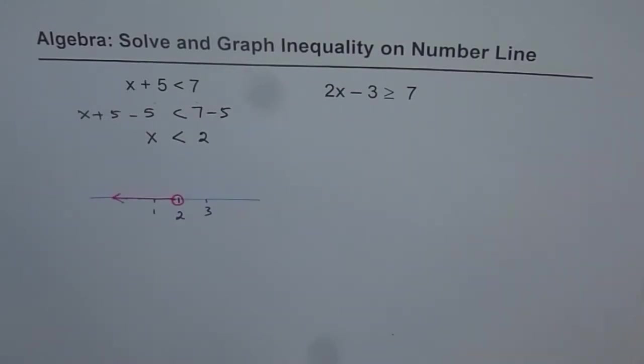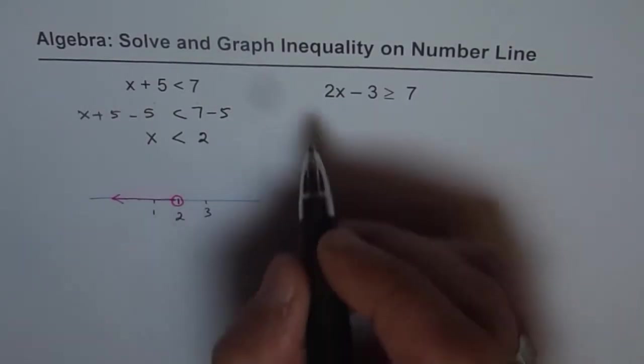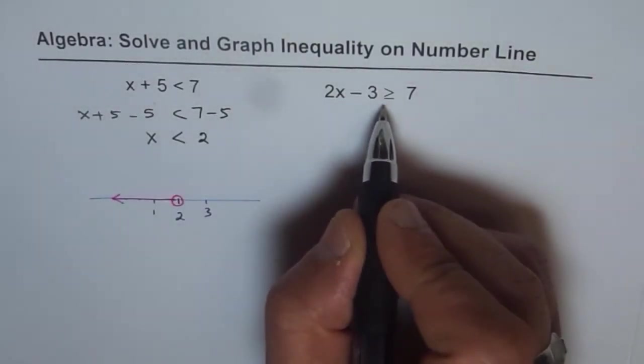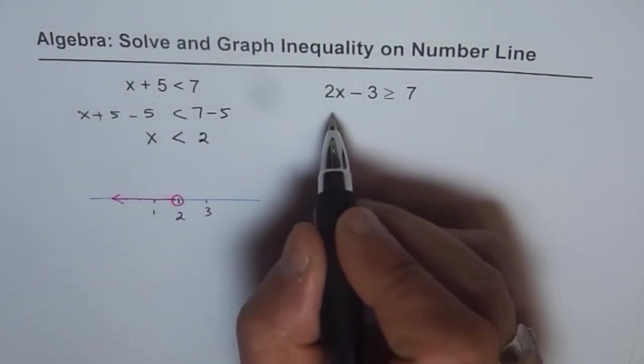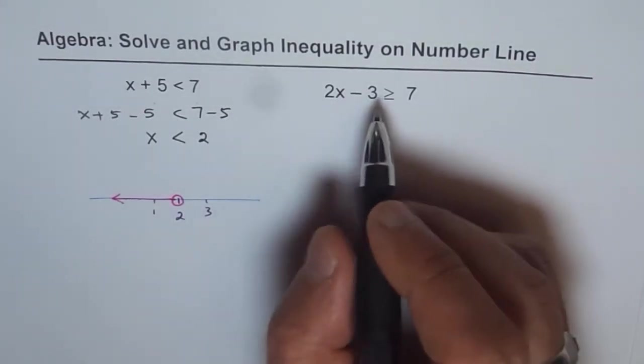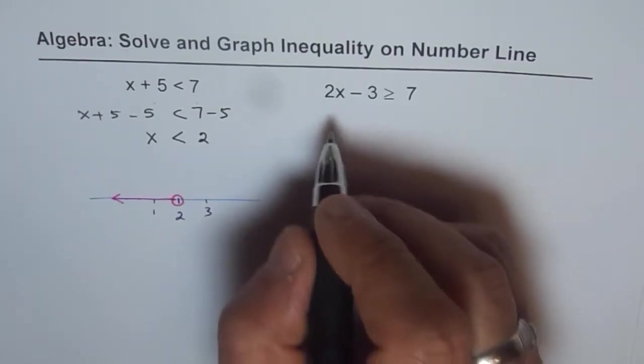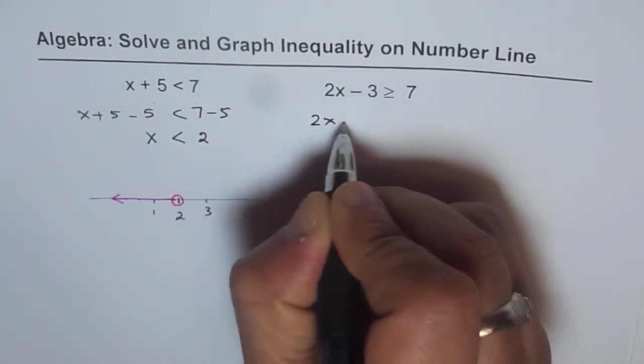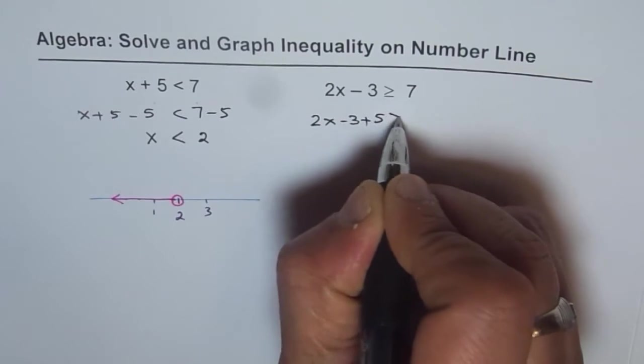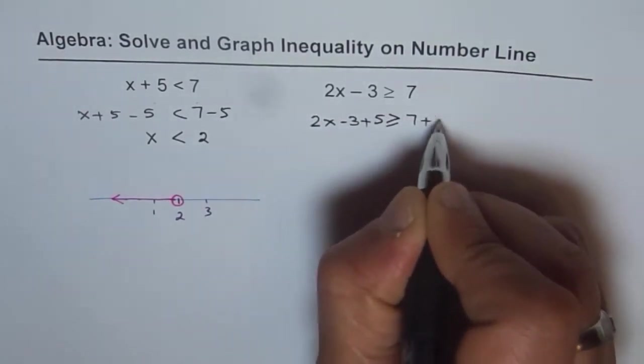Now, we will go through another example and I hope with that you will understand exactly how to write solution for these inequalities. So we have 2x minus 3 greater than or equal to 7. Now, we need to isolate for x. First, let's get rid of minus 3 by adding 3 on both sides. We get 2x minus 3 plus 3 greater than or equal to 7 plus 3.